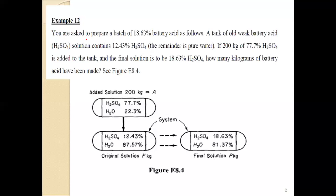For example, you are asked to prepare a batch of 18.63% battery acid as follows. You prepare this solution by adding a new solution with 77.7% sulfuric acid to an old weak solution with low concentration.